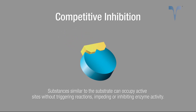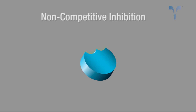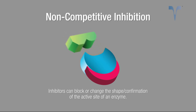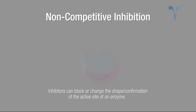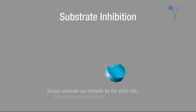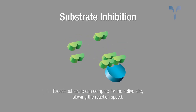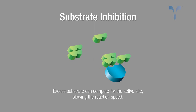Substances similar to the substrate can occupy active sites without triggering reactions, impeding or inhibiting enzyme activity. Inhibitors can block or change the shape or conformation of the active site of the enzyme. Excess substrates can also compete for the active site, slowing the reaction speed.